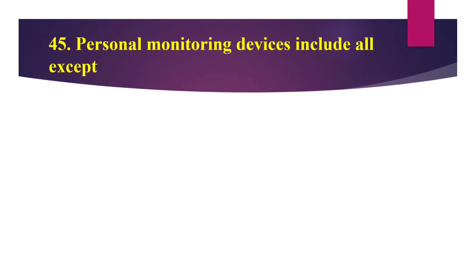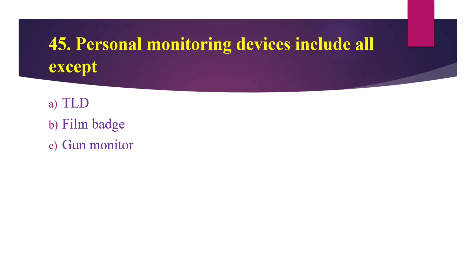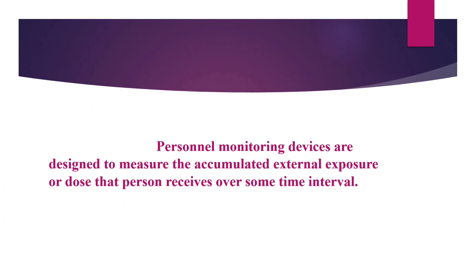Question number 45: Personal monitoring devices include all except — Option A: TLD, Option B: film badge, Option C: gun monitor, Option D: pocket dosimeter. The answer is Option C — gun monitor.